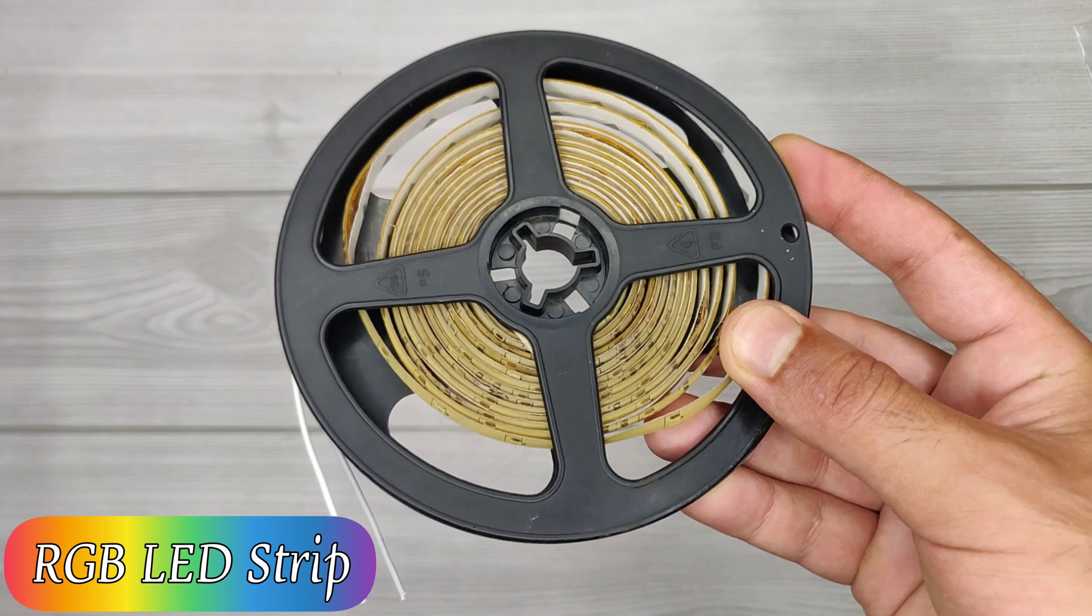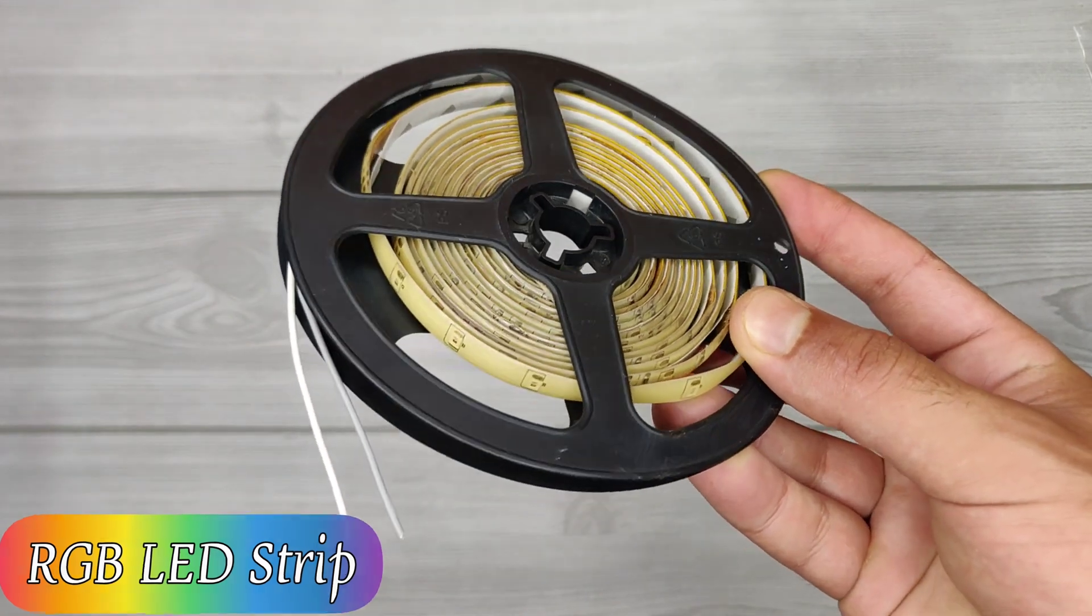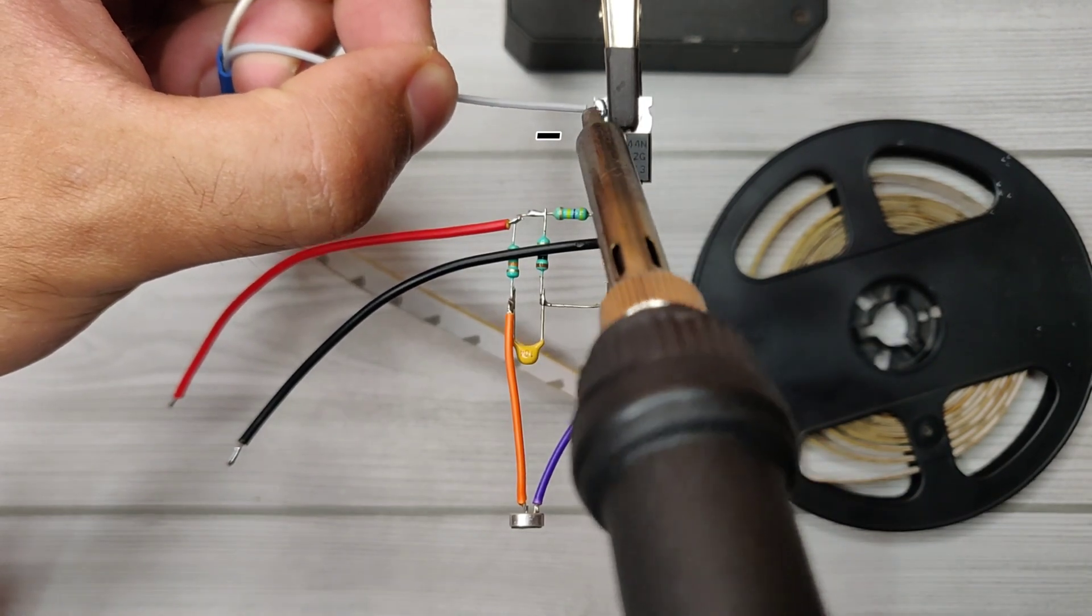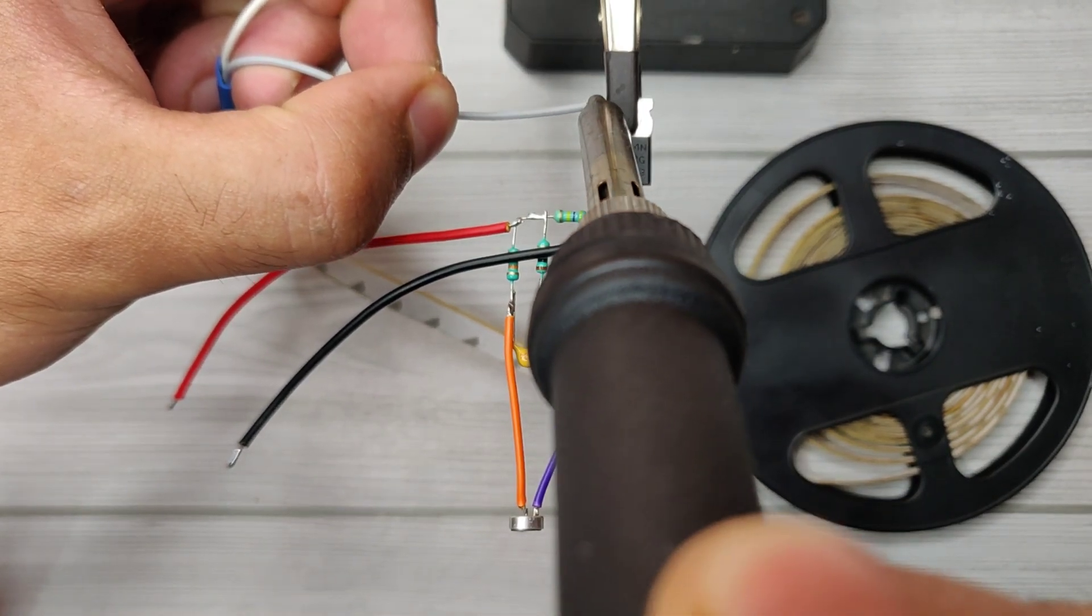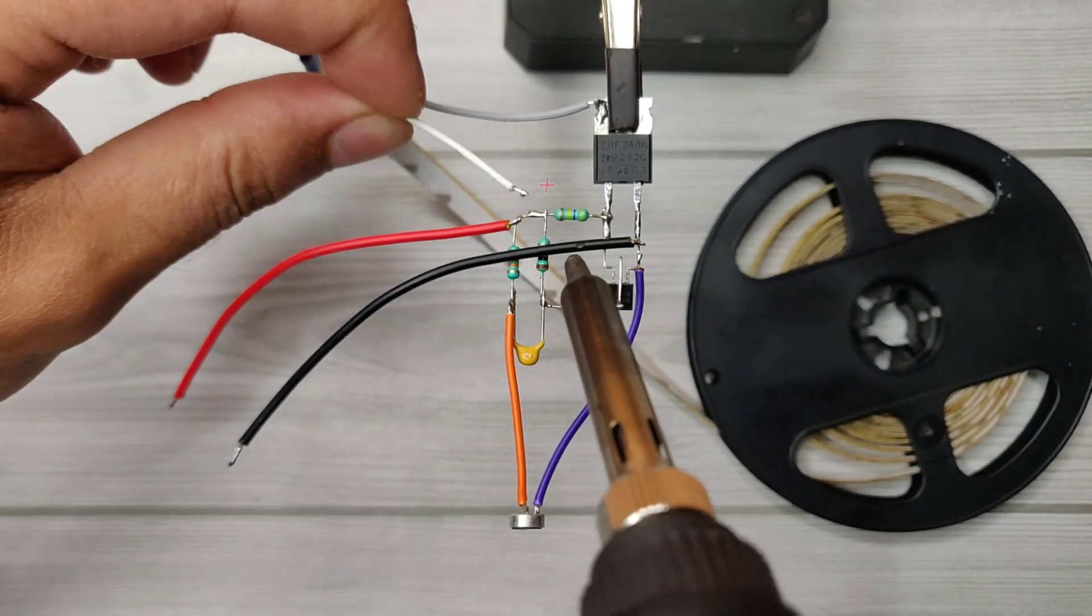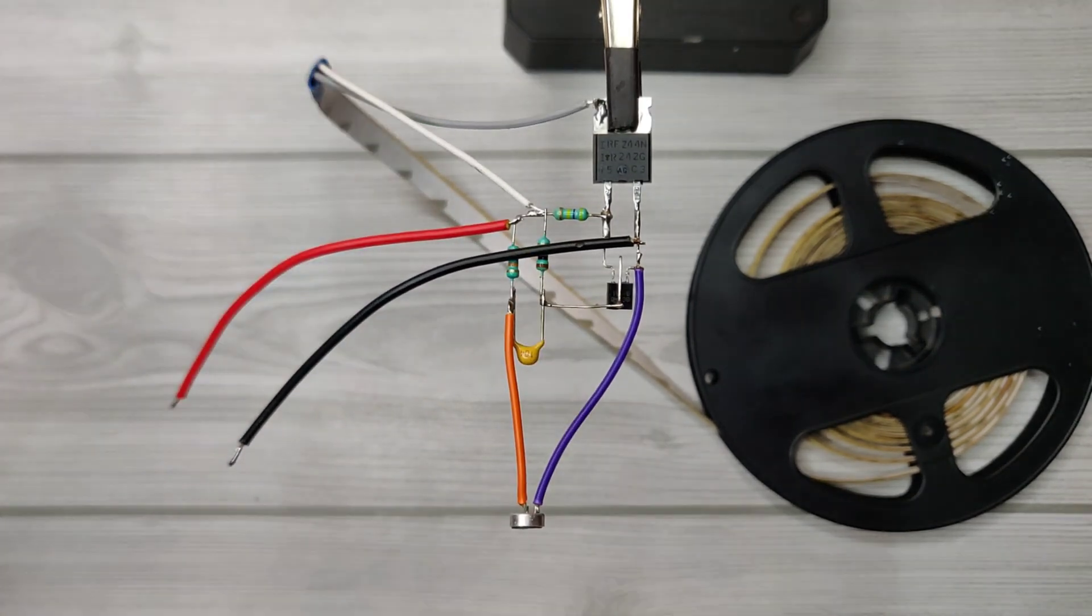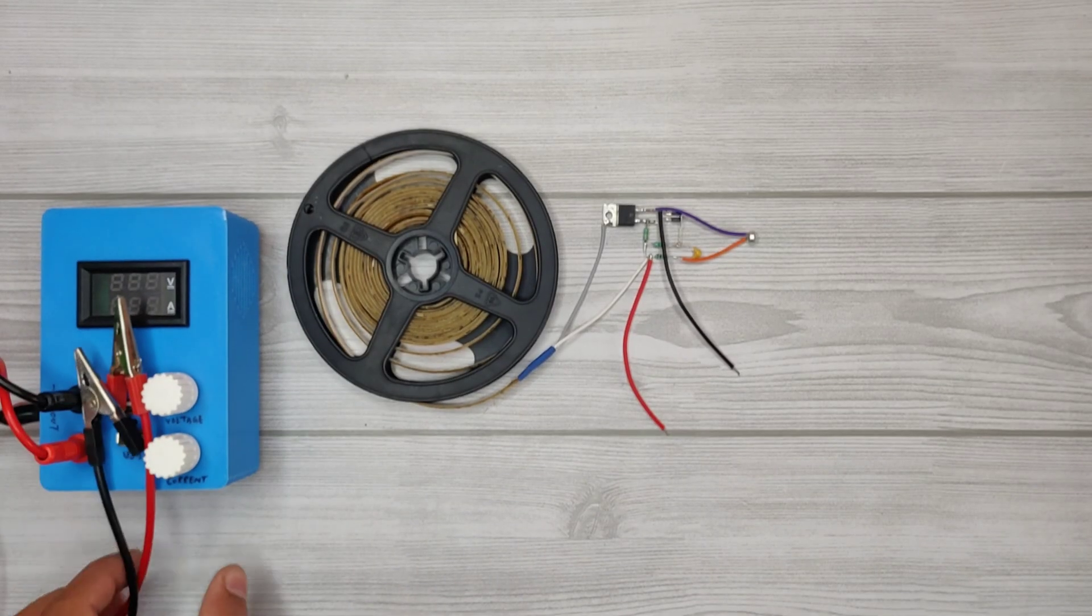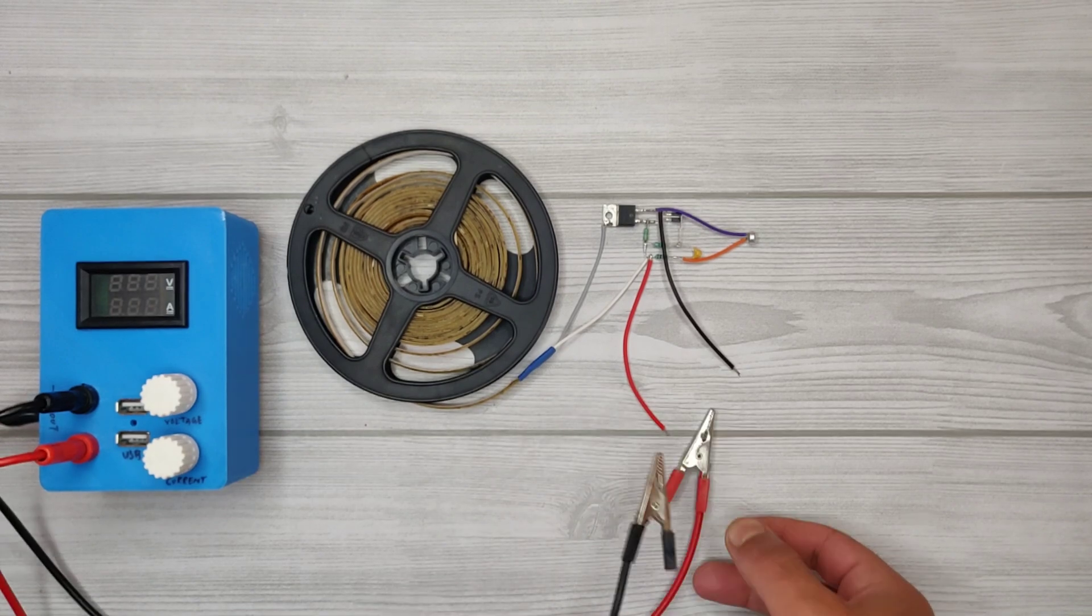I will use this RGB LED strip. Solder LED negative with drain pin of MOSFET and LED positive directly with DC positive. Here is circuit diagram, download link is in video description. Now let's test the circuit by connecting 12V power supply.